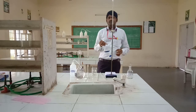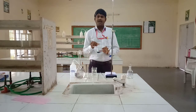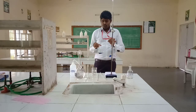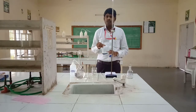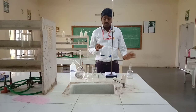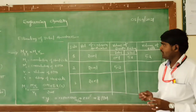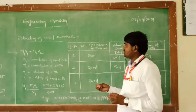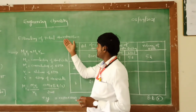Again, one more time. Take a clean and dry conical flask. Add 20 ml hard water sample, 2 ml buffer solution, and 3 drops of EBT indicator. This is for the estimation — the calculation part — estimation of total hardness.